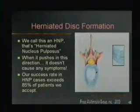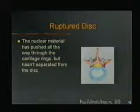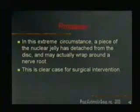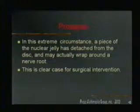In a rupture, the nuclear jelly is pushed all the way through the annular rings but remains attached to the disc. In a prolapse, a piece of the nuclear jelly has actually detached from the disc — it may wrap around a nerve root. In any case, it's a clear case for surgical intervention and chiropractic care is no longer a reasonable method of treatment.